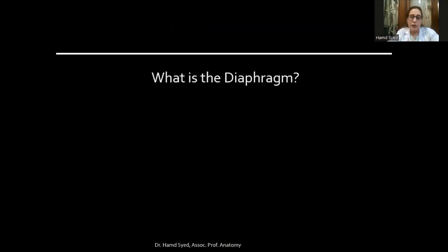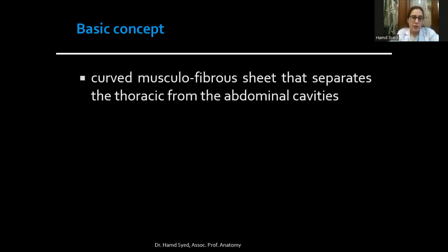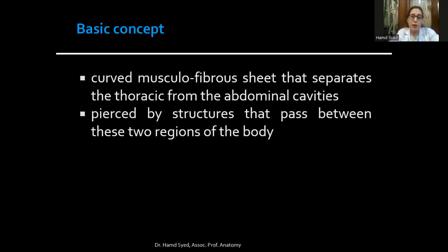What is the diaphragm? This word has been derived from a Greek word — 'dia' means through and 'fram' means fence, so diaphragm literally means 'through the fence.' The basic concept is that it is a curved musculofibrous sheet that separates the thoracic from the abdominal cavities. It is pierced by structures passing between these two regions, which is why it is called the diaphragm.